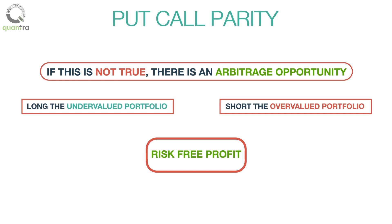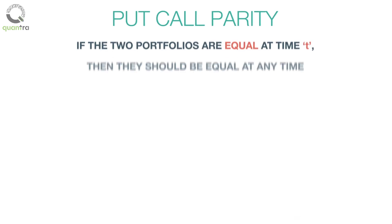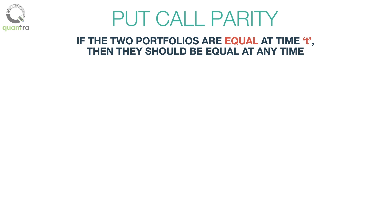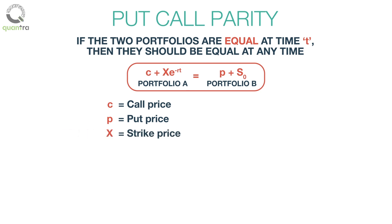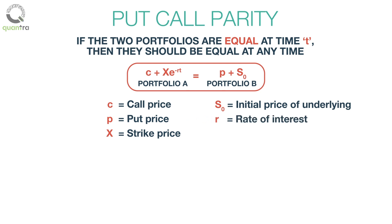This brings us to the conclusion that if the two portfolios are equal at time T, then they should be equal at any time, and this is given by the following equality. Where C is the call price, E is the put price, X is the strike price of the call and put, S0 is the initial price of the underlying, R is the rate of interest, T is the time to expiry, and E to the power minus RT is the discounting factor.